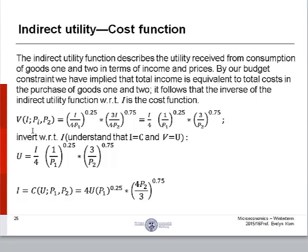Okay, so here we have the indirect utility function. Invert with respect to I, understanding that I equals C, and V equals U, utility. So, when we invert it, we have 4U P1 to the power of 0.25 times 4U, or we have 4U times P1 to the power of 0.25 times 4P2 over 3 to the power of 0.75.